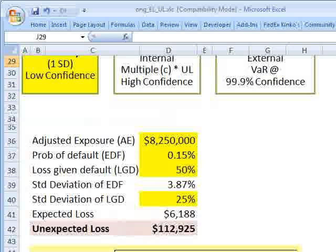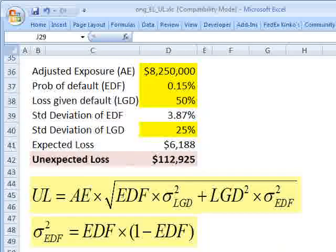So now, if we consider the example in Michael Ong, here's the formula for unexpected loss. And I'll remind you, what we're doing is calculating the volatility of the potential loss in asset value. And so it's a one standard deviation calculation here.